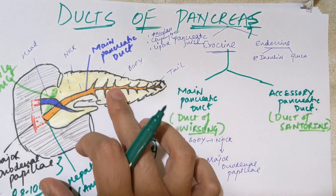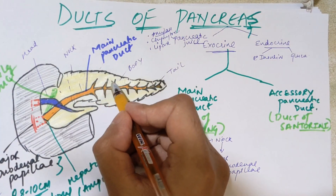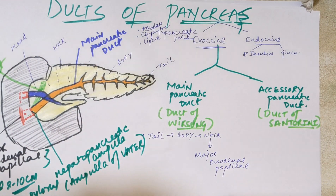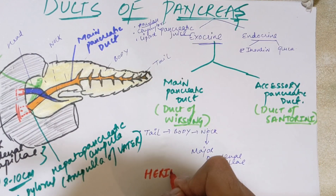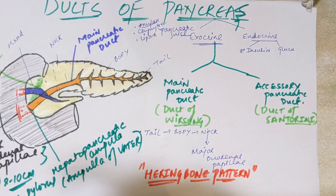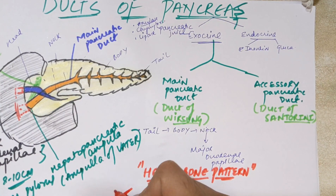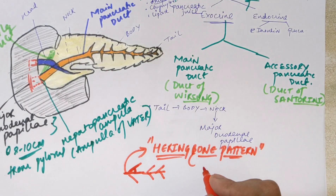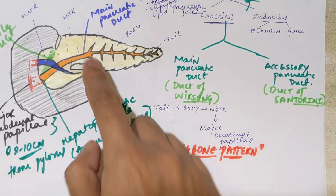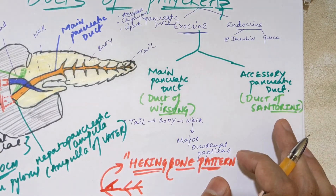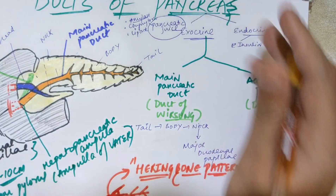An important specific feature of the main pancreatic duct is the herring bone pattern. The small branches draining into the main pancreatic duct from all parts of the pancreas form a V-shape at acute angles, resembling the skeletal structure of the herring fish. This herring bone pattern is a specific and important identifying feature of the main pancreatic duct, also called the duct of Wirsung.